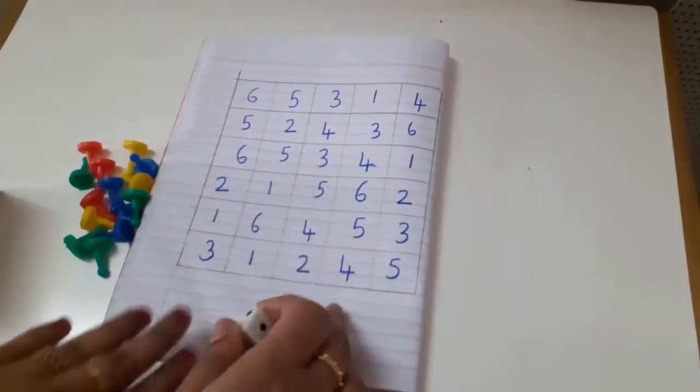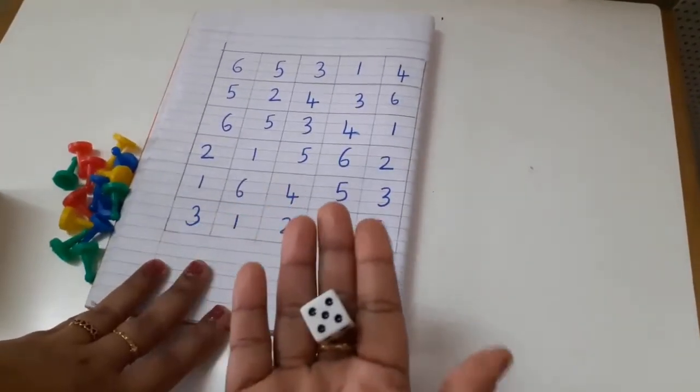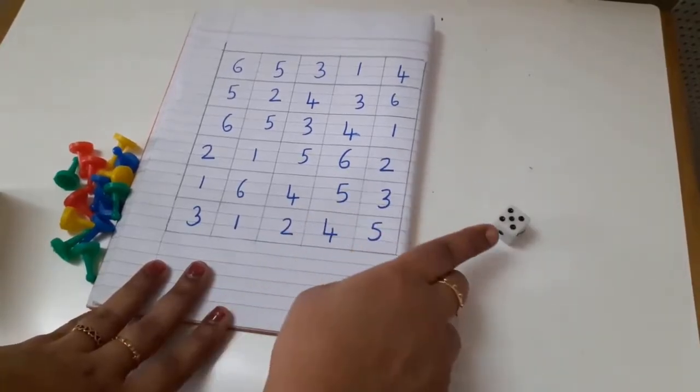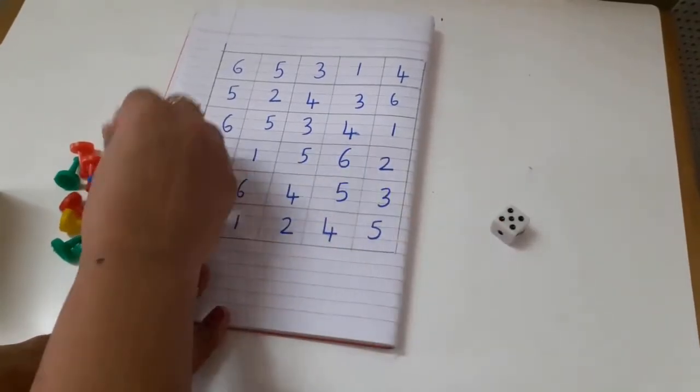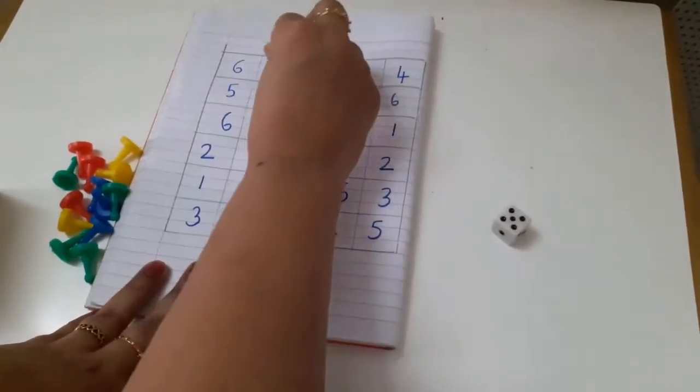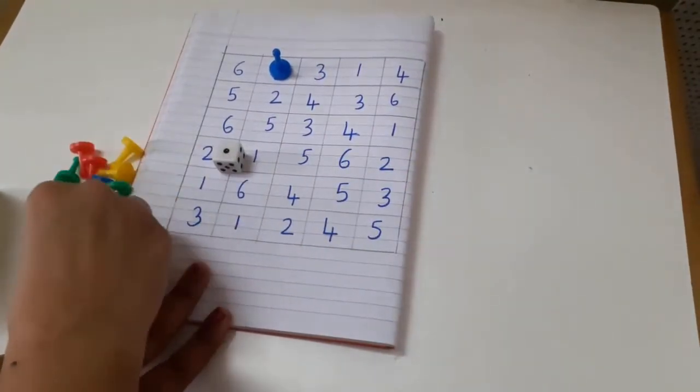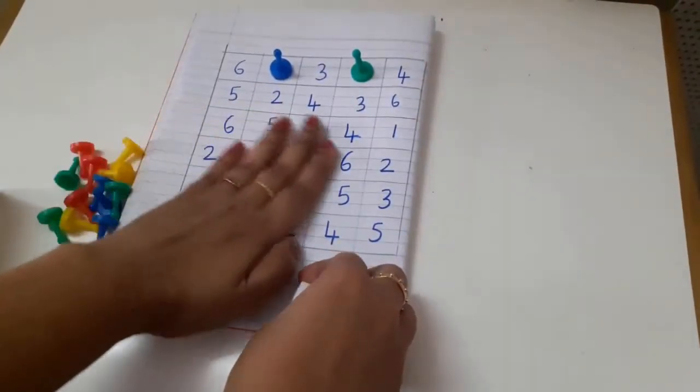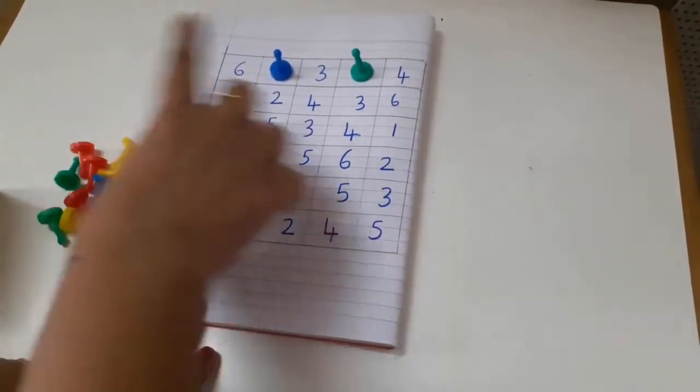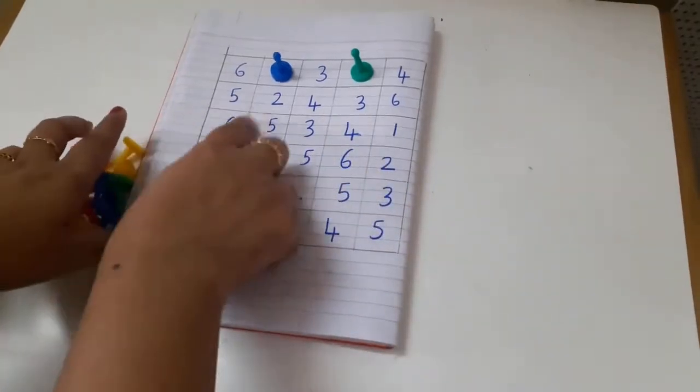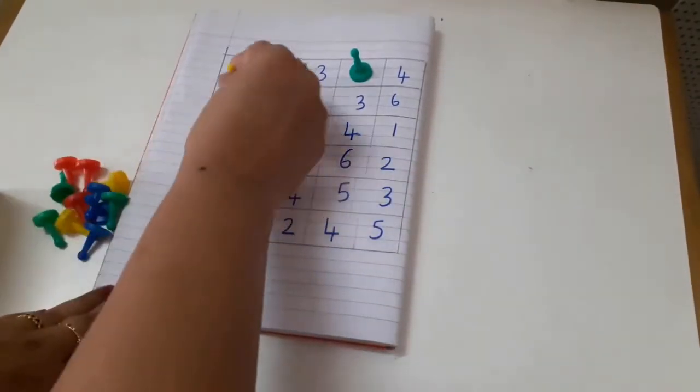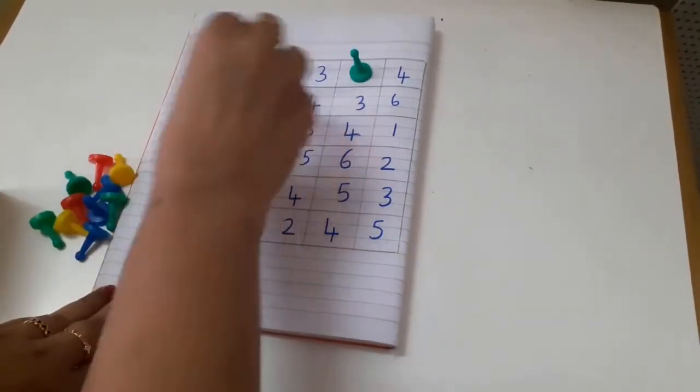It's a single player game. What they have to do is roll the dice - if number 5 comes, they'll take one coin and keep it here. They'll roll it again, if it's number 1 they'll keep it here. So they will keep on playing until all the boxes are filled.